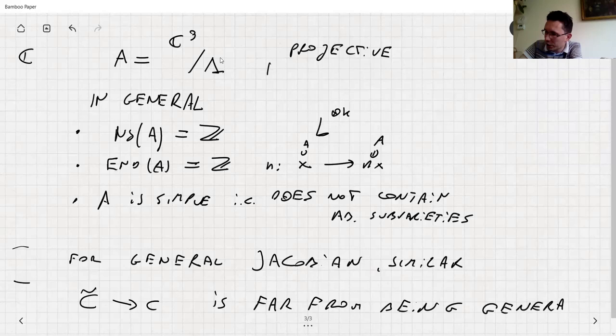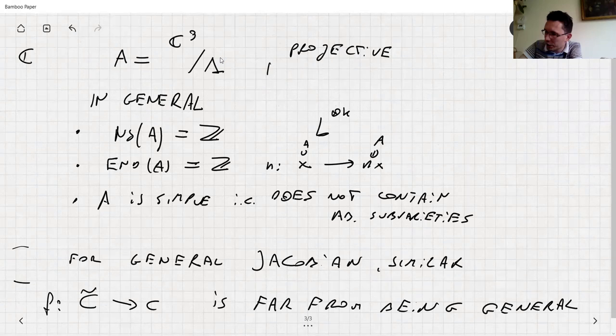If you have a covering, this curve is far from being general — the Jacobian contains a sub-variety, namely the image of the smaller Jacobian. And the bigger Jacobian is much bigger, so we are really setting up our story to be able to work.